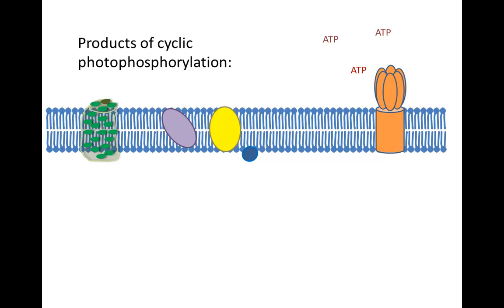This is how photosynthetic bacteria are able to absorb energy from the sun and use it to make ATP.